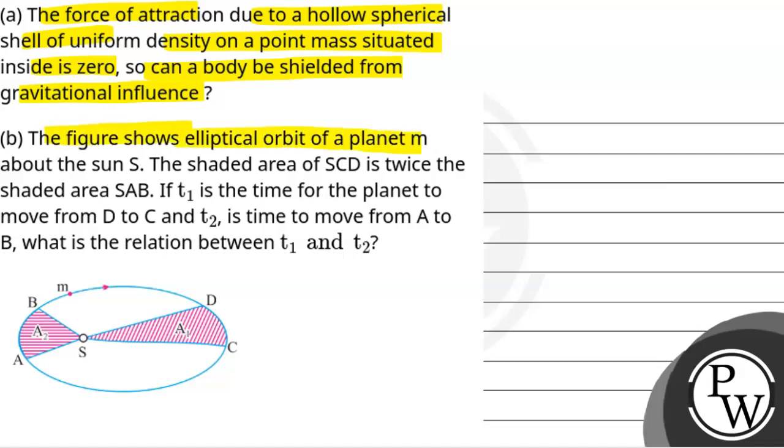The figure shows the elliptical orbit of a planet M about the sun S. The shaded area of SCD is twice the shaded area SAB. If T1 is the time for the planet to move from D to C and T2 is time to move from A to B, what is the relation between T1 and T2?